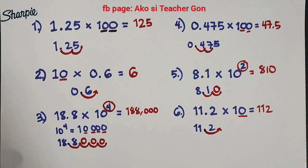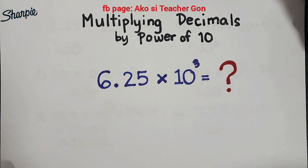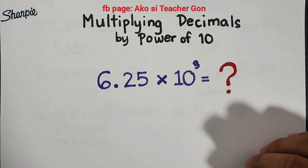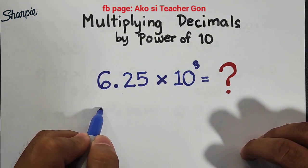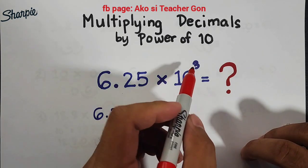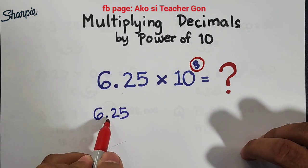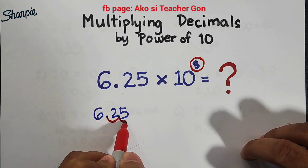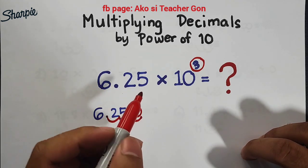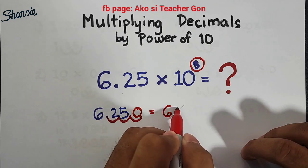So based on our examples from 1 to 6, I think you are now ready to answer this problem. What is 6.25 times 10 raised to the 3rd power? We have 6.25, and the exponent is 3. From the decimal point, we will move 3 decimal values from left to right: 1, 2, and 3. There's a space there, so you put a 0. The correct answer is simply 6,250.